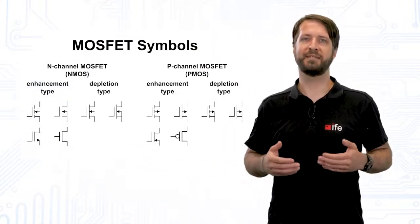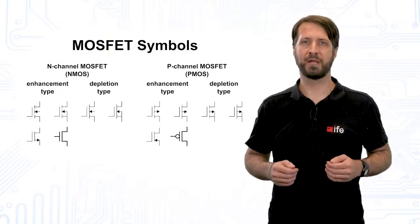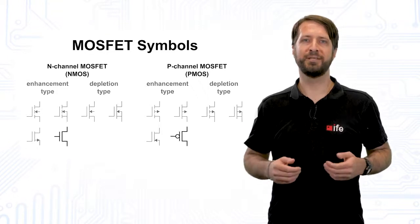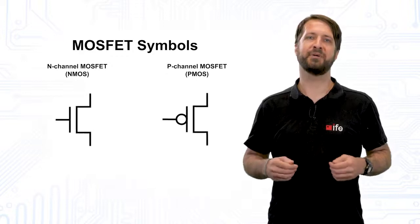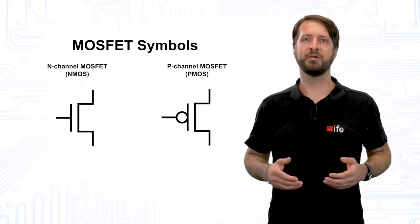CMOS circuits consist of pairs of MOSFET transistors which switch at opposite input levels. Hence, we need NMOS and PMOS transistors, which have many different symbols. For this video, we will use these two simplified symbols because they convey all the information we need for our circuits.